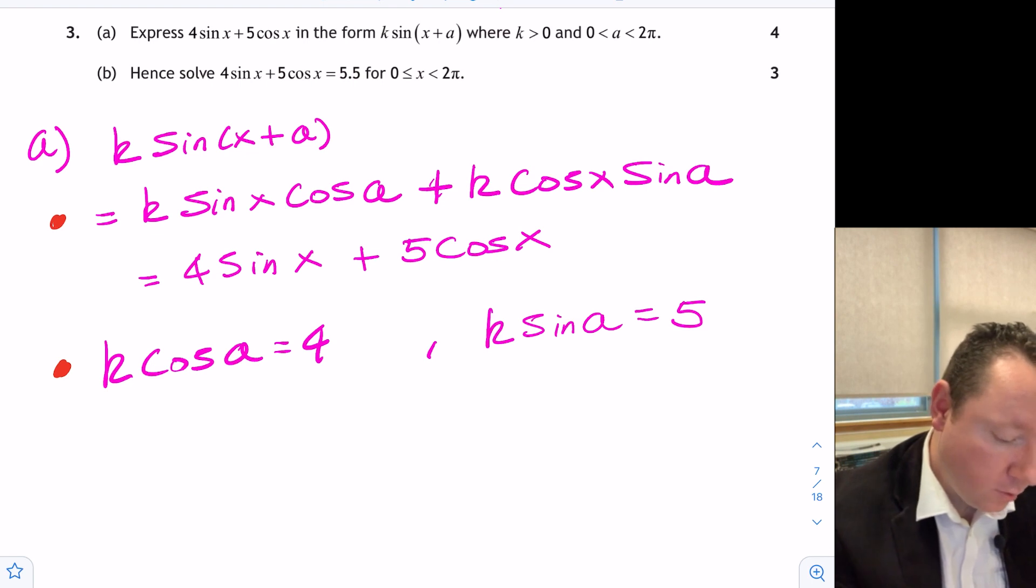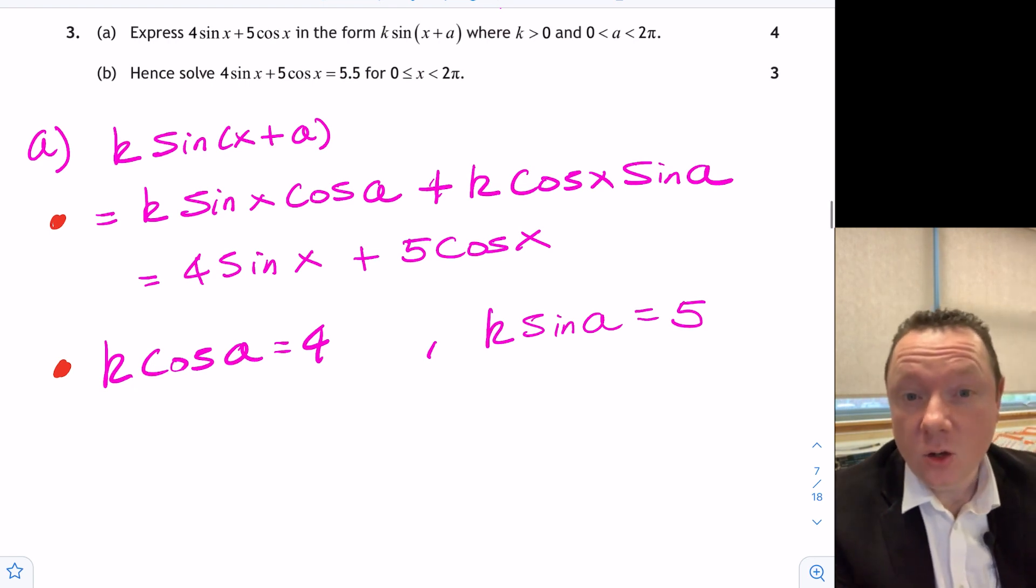So we're now going to work out k. Remember, the process for this is to square and add, like Pythagoras, because sin squared plus cos squared equals 1. So eliminate it. I'll do that in the long way.